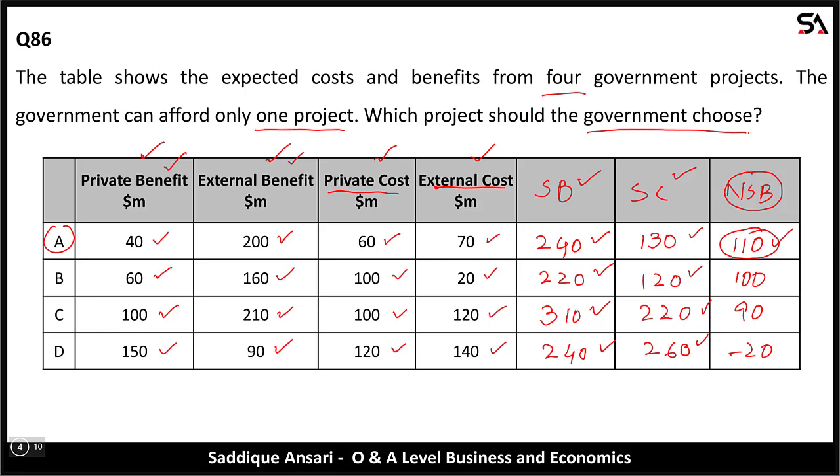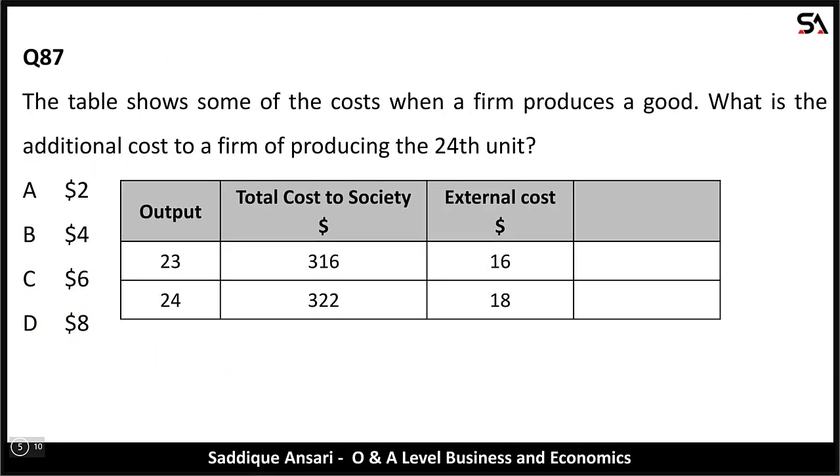Since the government's objective is to maximize net social benefit and its maximum value is 110, option A is the correct answer.